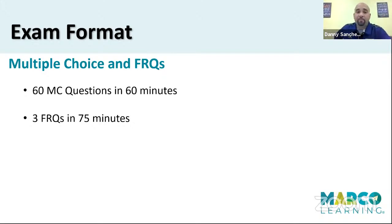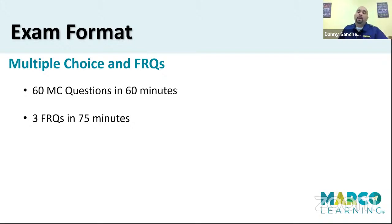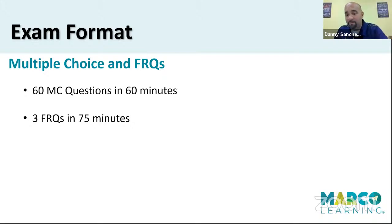Also, the writing portion: three FRQs, you have 75 minutes for this. If you're doing the paper and pencil exam, you can divide the time how you want. If you are doing the digital exam, you are locked into 25 minutes per FRQ. I'm going to reveal in the exam hacks why I very strongly suggest you don't do it that way. Again — multiple choice: 60 questions, 60 minutes. FRQs: three FRQs, 75 minutes. If you have the choice, I'm strongly advocating to do the paper exam on May 4th.